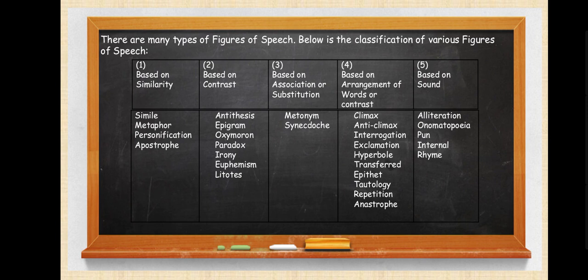Now, for your reference, I have divided figures of speech based on their types. There are many types: first, based on similarity — simile, metaphor, personification, and apostrophe. Second, based on contrast — antithesis, epigram, oxymoron, paradox, irony, euphemism. Third, based on association or substitution — metonymy, synecdoche. Fourth, based on arrangement of words — climax, anticlimax, interrogation, exclamation, hyperbole, transferred epithet, tautology, repetition, anastrophe. And last, based on sound — alliteration, onomatopoeia, pun, and internal rhyme.